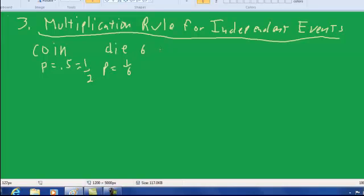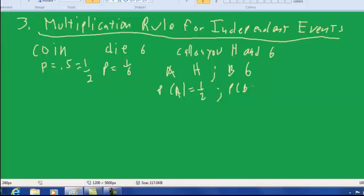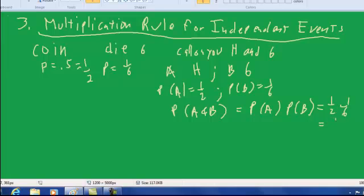Now suppose that there were 12 people in the class. Then I could flip a coin and roll a die. And I would call on you if I get a heads and roll a six. So we could call event A, get a heads. Event B, get a six. Probability of A is equal to 1 half. Probability of B is equal to 1 sixth. Probability of A and B equals the probability of A times the probability of B. That's our multiplication rule. Equals 1 half times 1 sixth equals 1 twelfth.